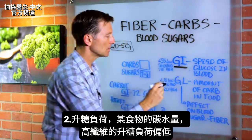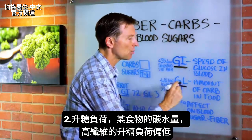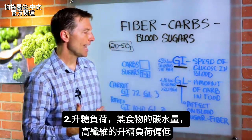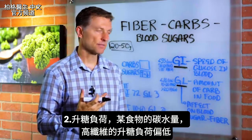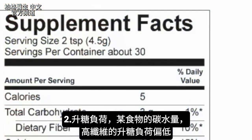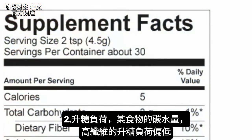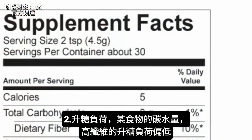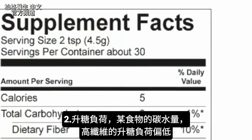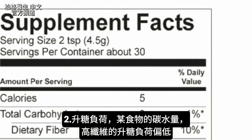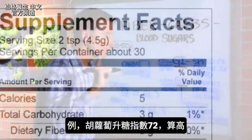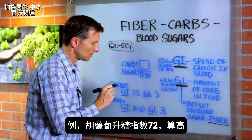And then glycemic load is the quantity of carbohydrate in that specific food. So let's say a certain food had a certain quantity of carbohydrate, but most of it was fiber — then this would be on the low side. Let me just give you an example.